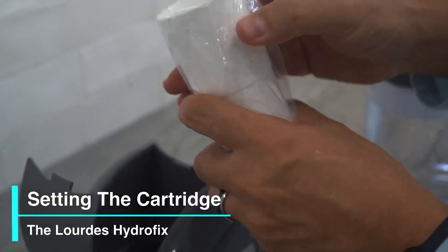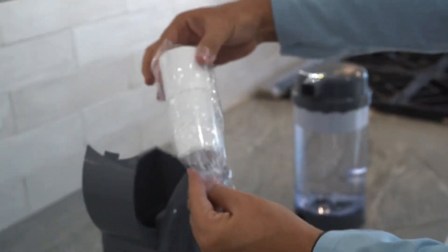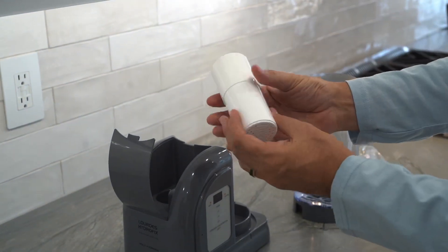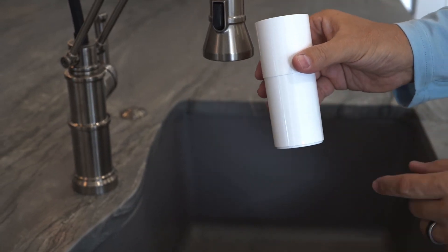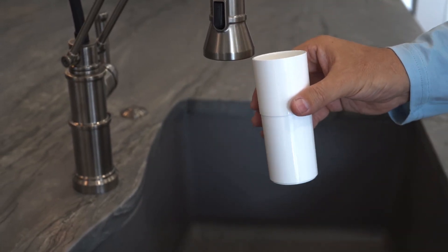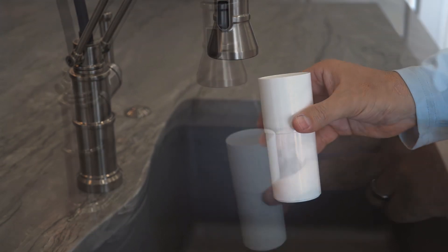Next, let's set the included cartridge. Remove the plastic wrapper and we're ready to begin. Place the cartridge under room temperature running water and shake it lightly for a few seconds to help the contents settle. Check to see if water is draining through the cartridge.